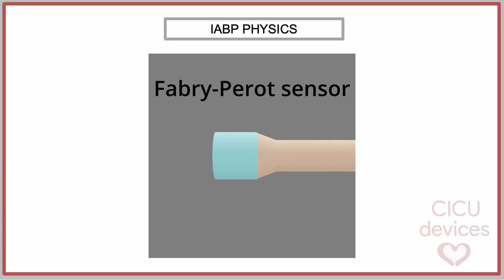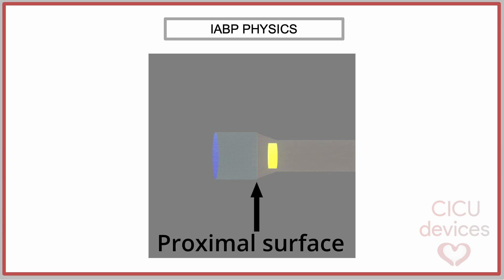The fiber-optic pressure sensor used in IABP catheters utilizes the Fabry-Perot interferometer. In this system, a light beam is generated in the console and travels through the optical fiber to the sensor. The Fabry-Perot interferometer cavity is formed by two parallel surfaces that reflect light. The proximal surface generates a partial reflection, while the distal surface generates a full reflection. When the light beam reaches the first layer, a certain percentage is reflected back to the photodetector, while the remaining light continues traveling a distance L before being fully reflected at the membrane level.